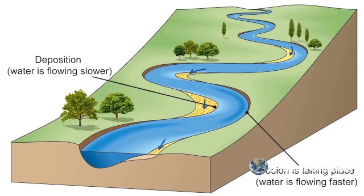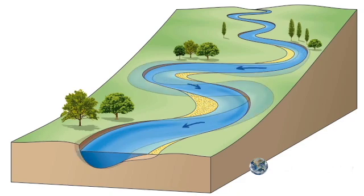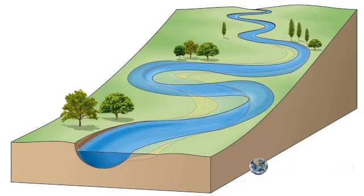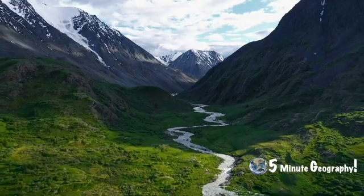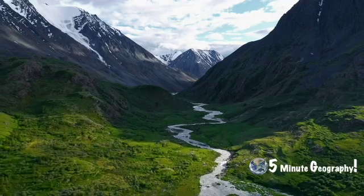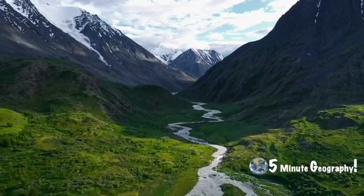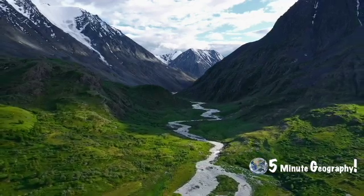As erosion on the concave bank and deposition on the convex bank continue, meanders migrate and move — from side to side across the valley floor and downstream. So a meander is simply a series of gently curving bends in the course of a river, and they are very evident in the middle or lower course.